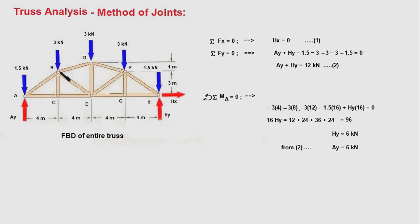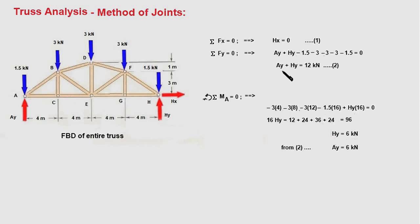Summing forces in the Y direction gives AY plus HY equal to 12 kilonewtons. Next, taking moments of all forces about point A — the loads at B, D, F, and H cause clockwise moments, with moment arms of 4, 8, 12, and 16 meters, while HY causes an anti-clockwise moment. Solving this equation gives HY equal to 6 kilonewtons, and substituting back gives AY equal to 6 kilonewtons. So AY is 6 kN, HY is 6 kN, and HX is zero.